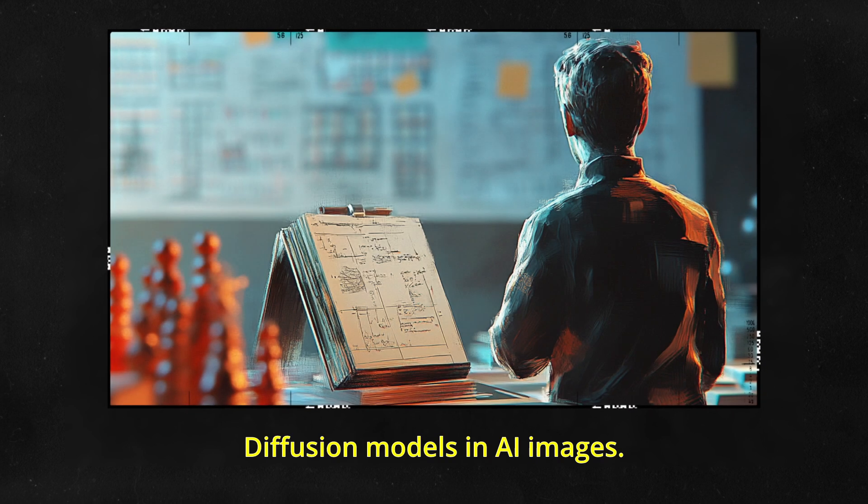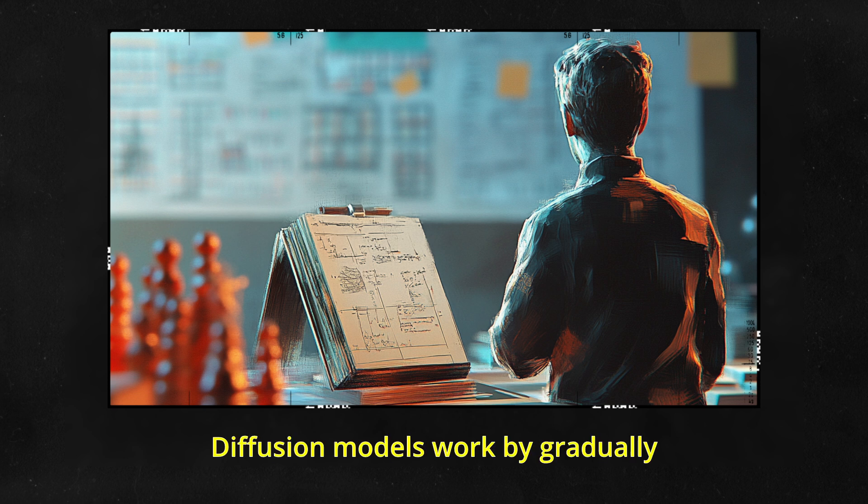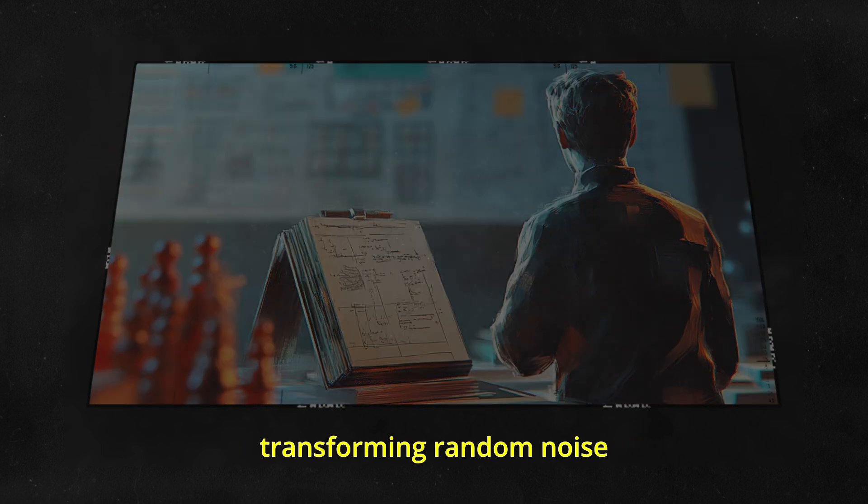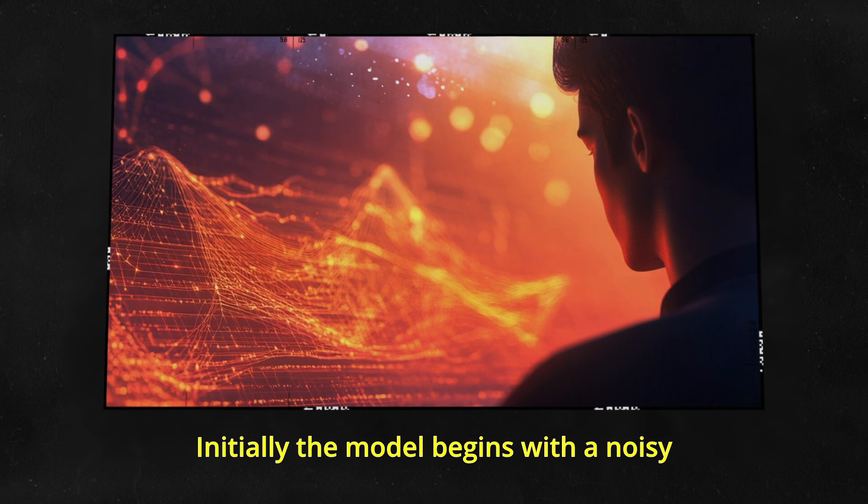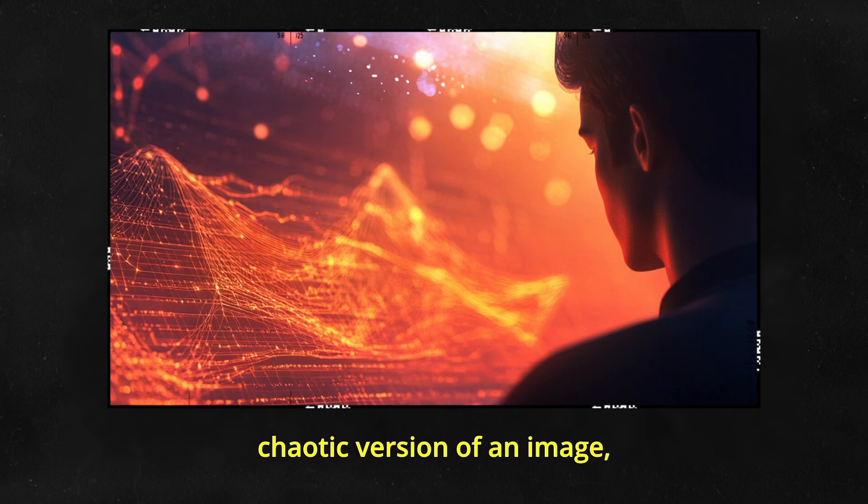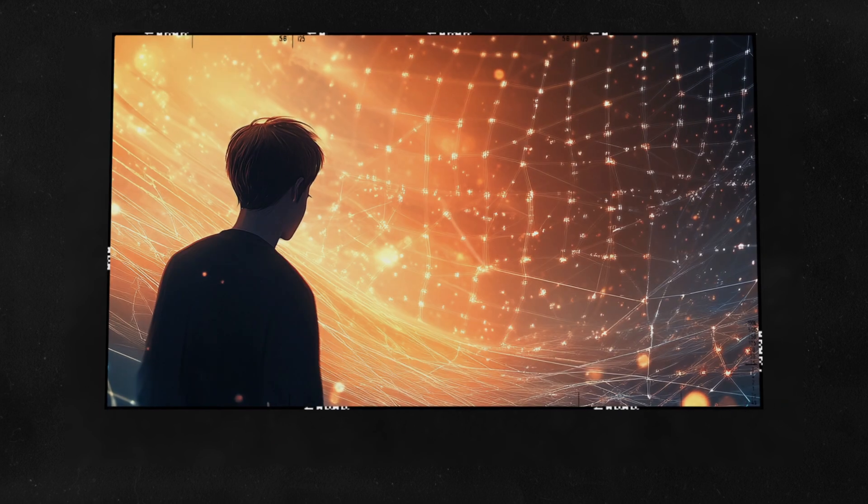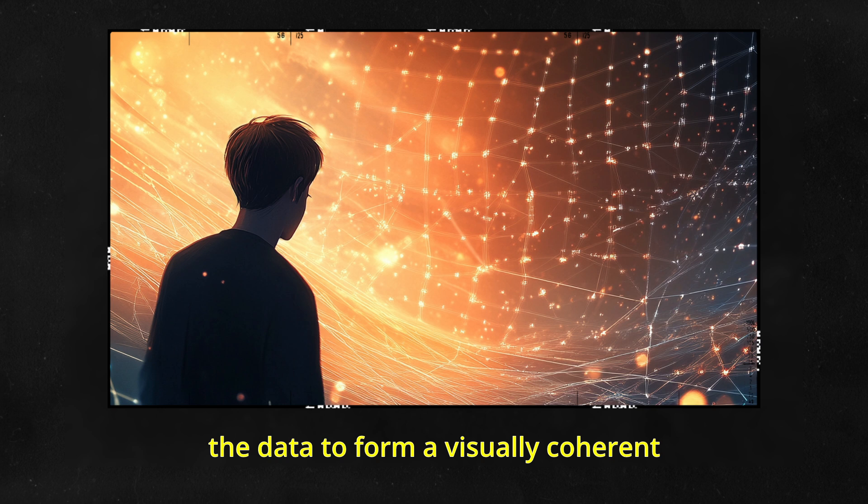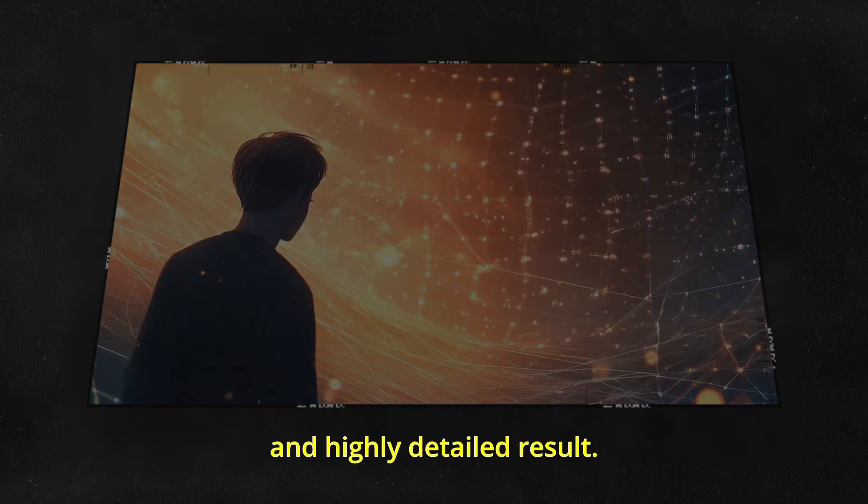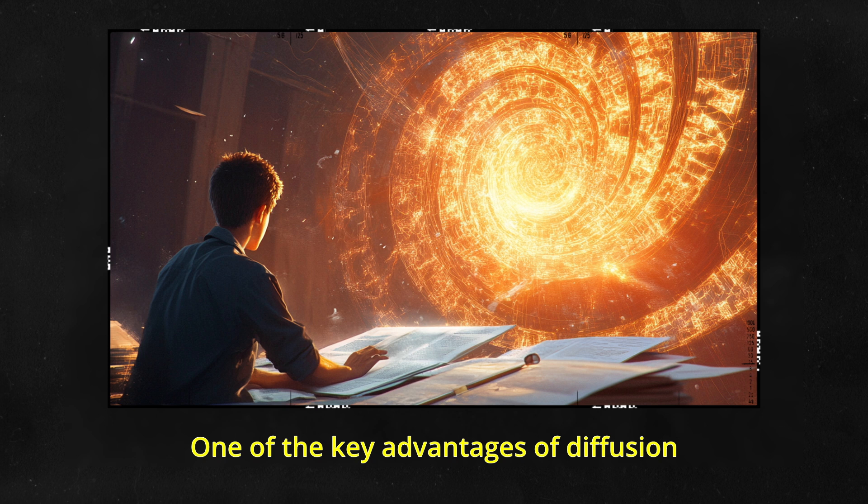Diffusion models in AI images. Diffusion models work by gradually transforming random noise into a meaningful output, such as an image or video, by following a stepwise process. Initially, the model begins with a noisy, chaotic version of an image, and through a series of iterations, it diffuses the noise, effectively refining and reconstructing the data to form a visually coherent and highly detailed result. One of the key advantages of diffusion models is the ability to produce intricate textures and subtle details.